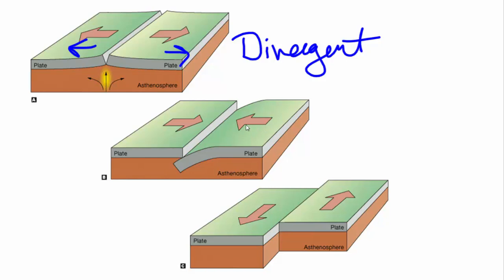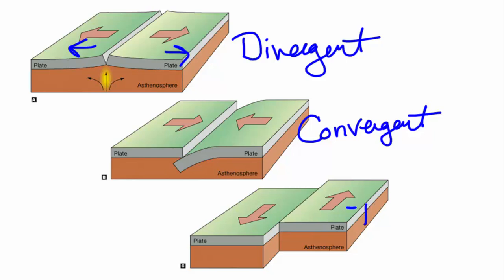When we have plates that are coming together, they're convergent boundaries. And the one that we're talking about today — plates sliding by one another — this is transform.